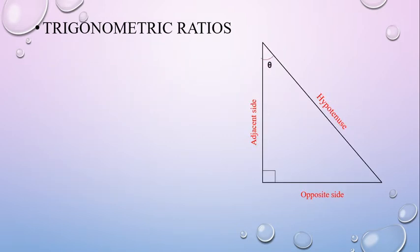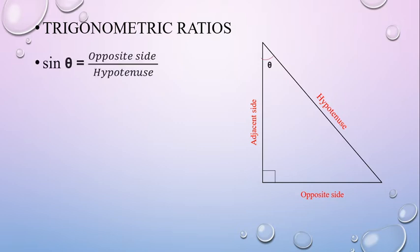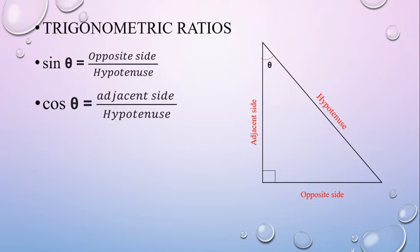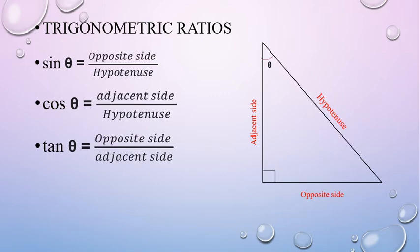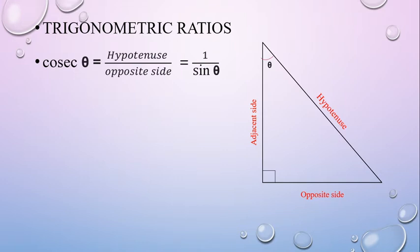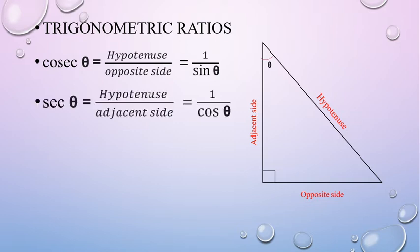If we have trigonometric ratios, this is the right angle of trigonometry. The 90 degree angle has an opposite side and a hypotenuse, which is the longest side of this triangle. Theta has an opposite side by hypotenuse. The adjacent side and opposite side relate to the hypotenuse. Cosec theta is the hypotenuse by adjacent side.